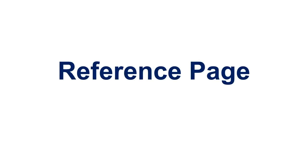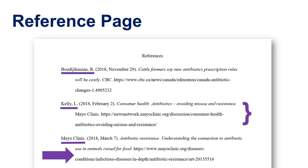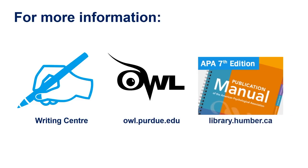Your reference list is at the end of your paper. Make sure to put your citations in alphabetical order. Don't forget to double space and indent after the first line. For more information and support with APA, book an appointment with the Writing Center, consult the OWL at Purdue, or refer to the APA resources available at Humber Libraries.